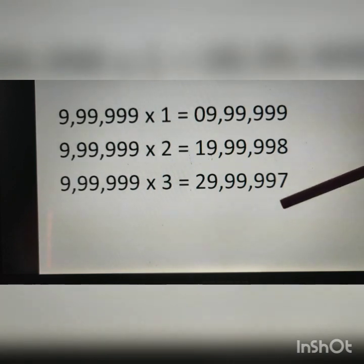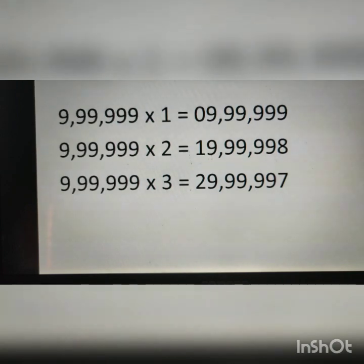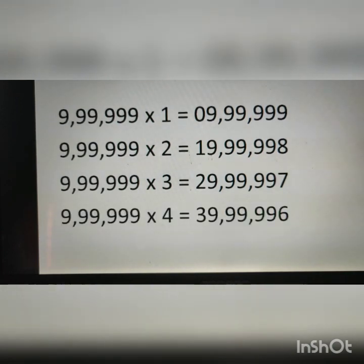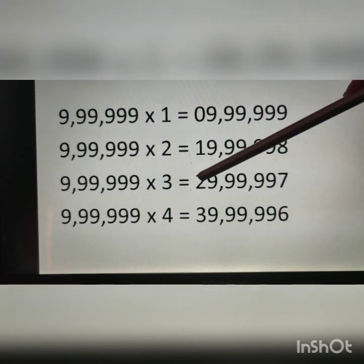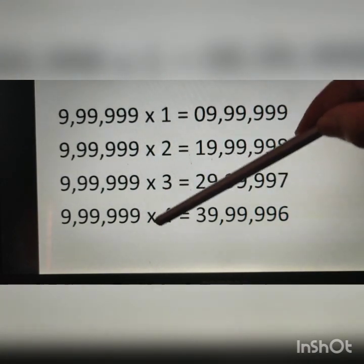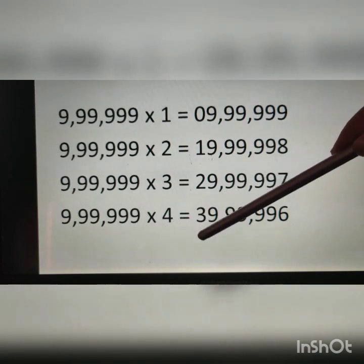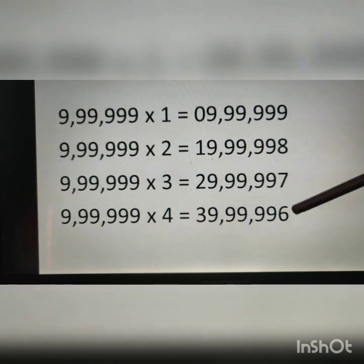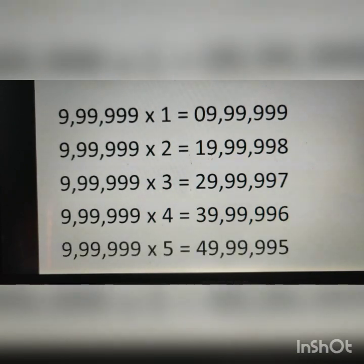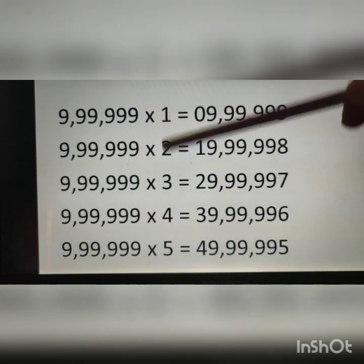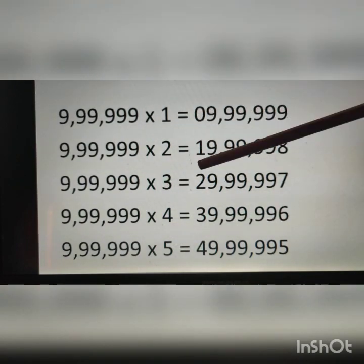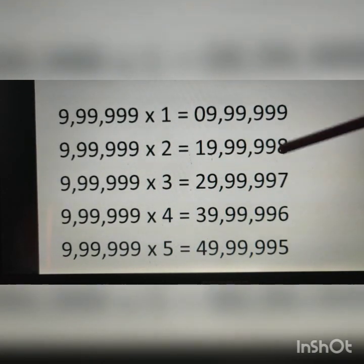So the next line's last digit will be 1 less than 7, which is 6. Looking at the full pattern: 1, 2, 3, 4 increasing, and 0, 1, 2, 3 for the next position — so the next numbers will be 5 and 4. The middle digits increase by 1 and decrease by 1 accordingly. By observing the pattern we can complete the series.